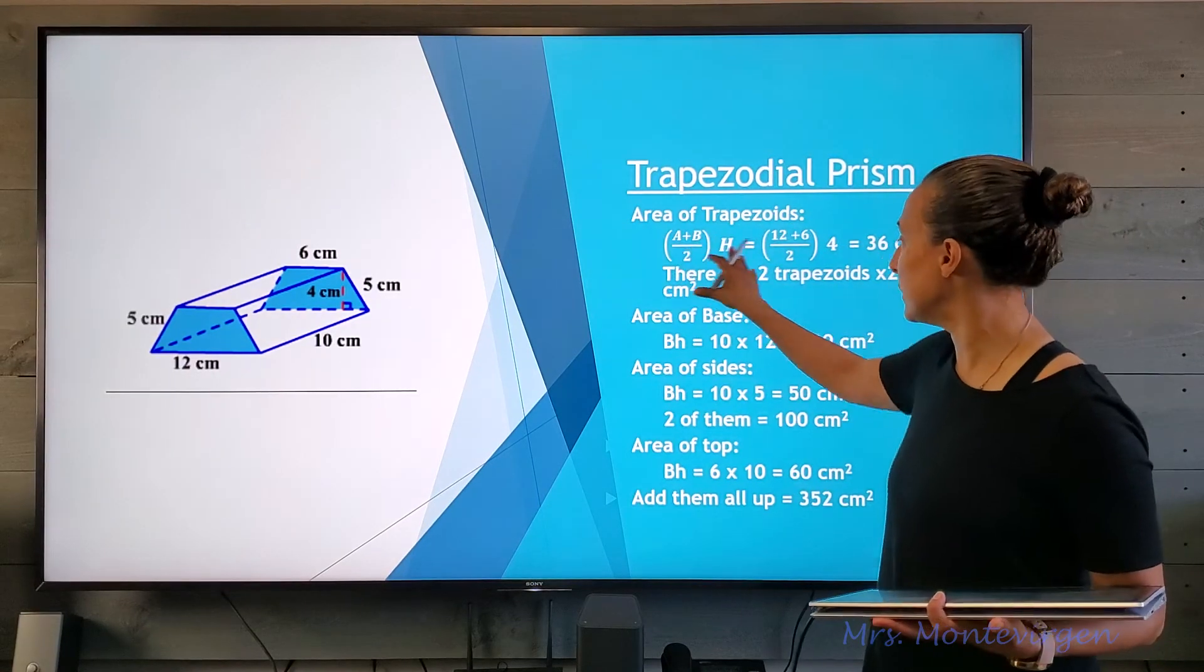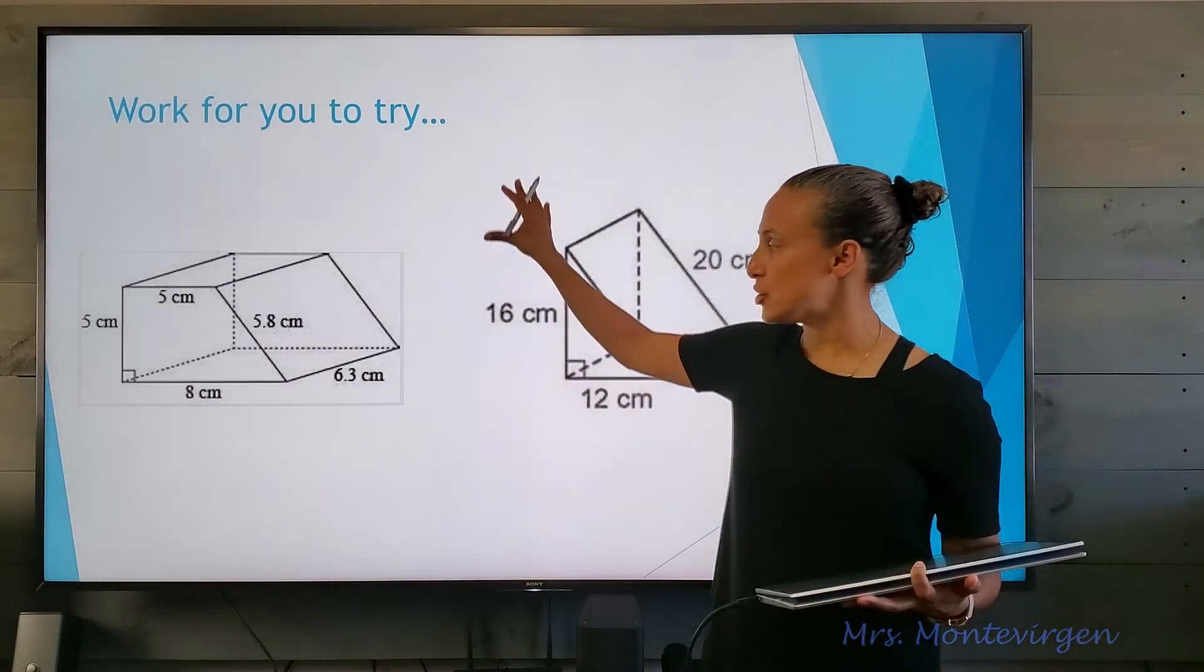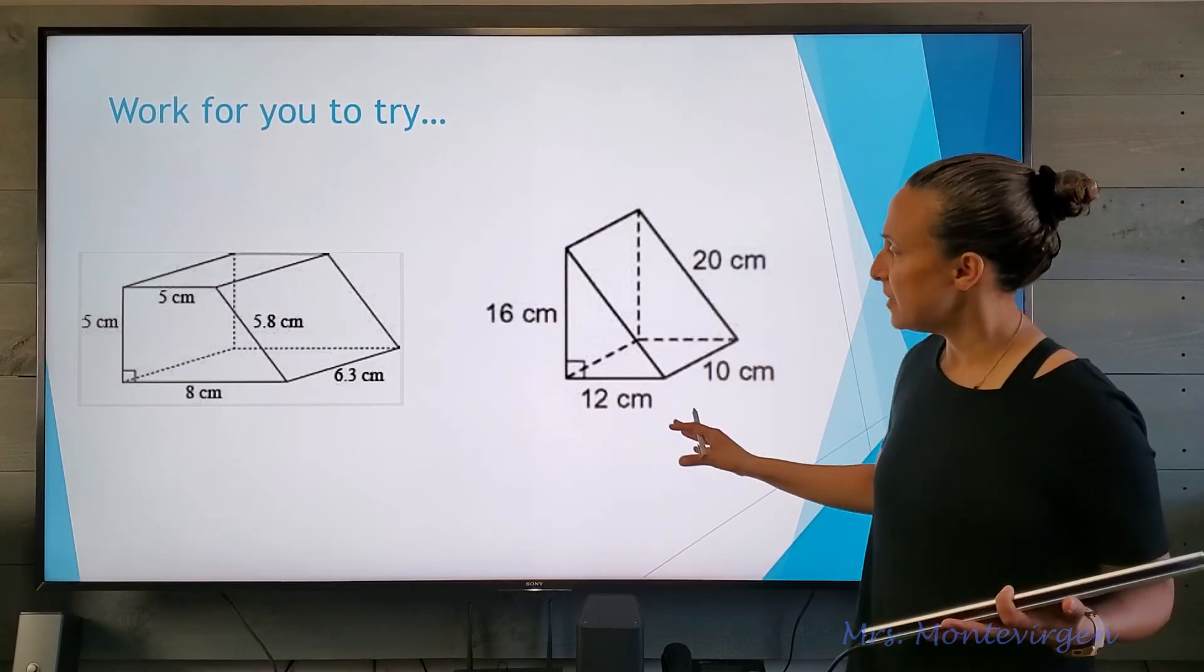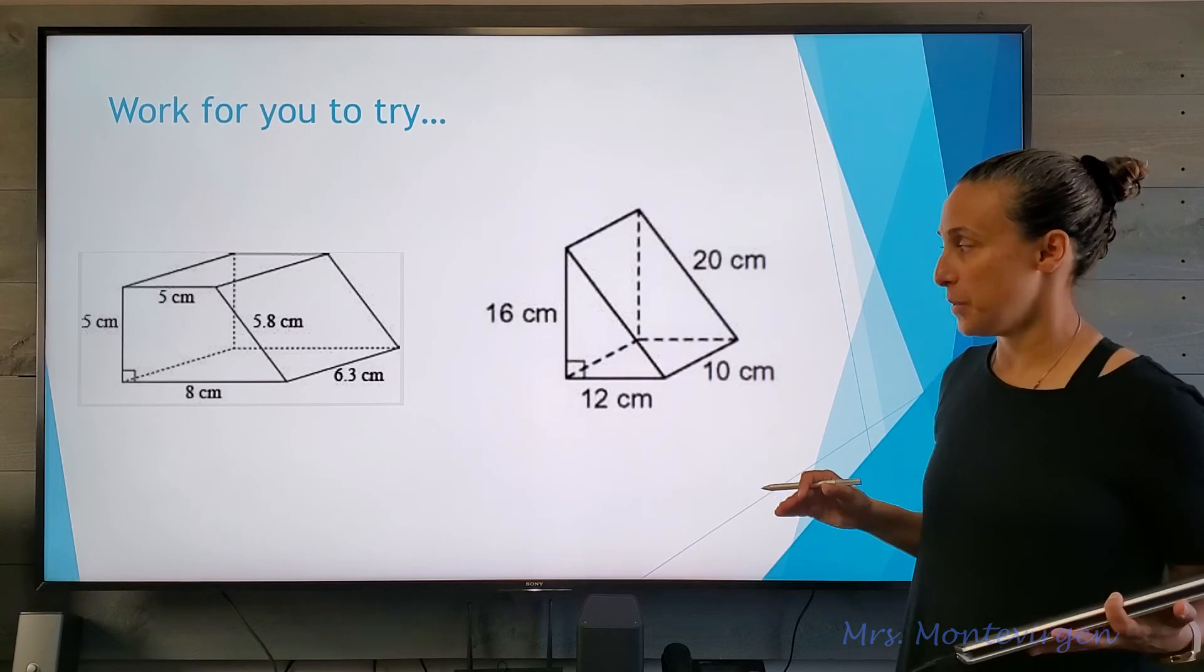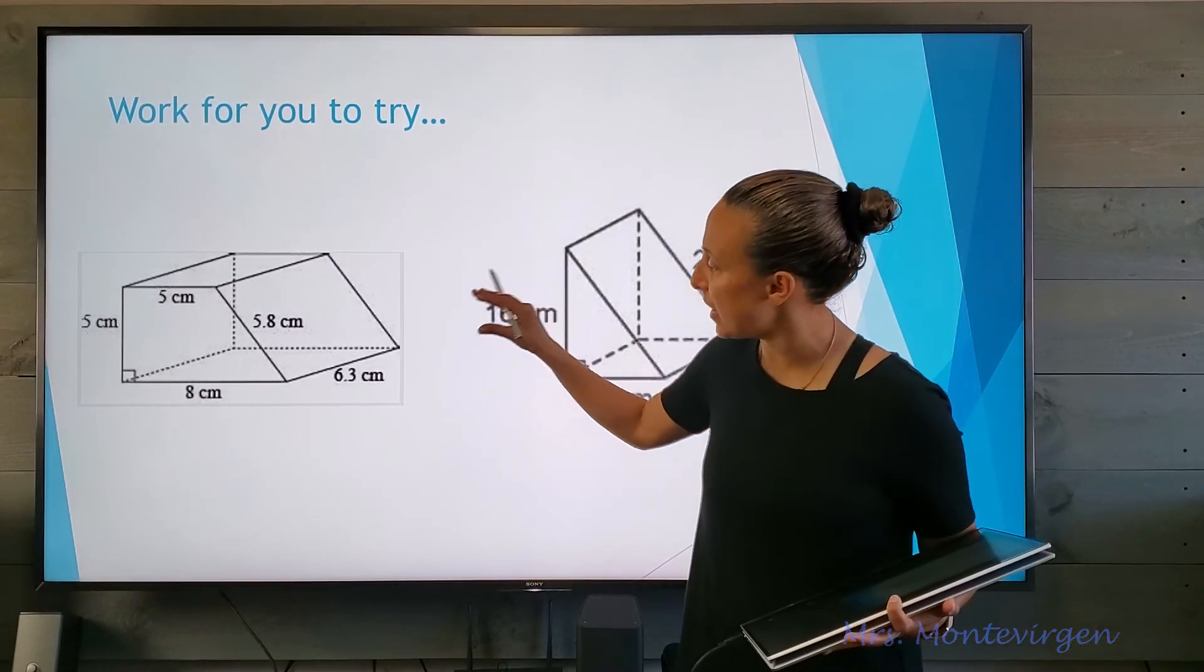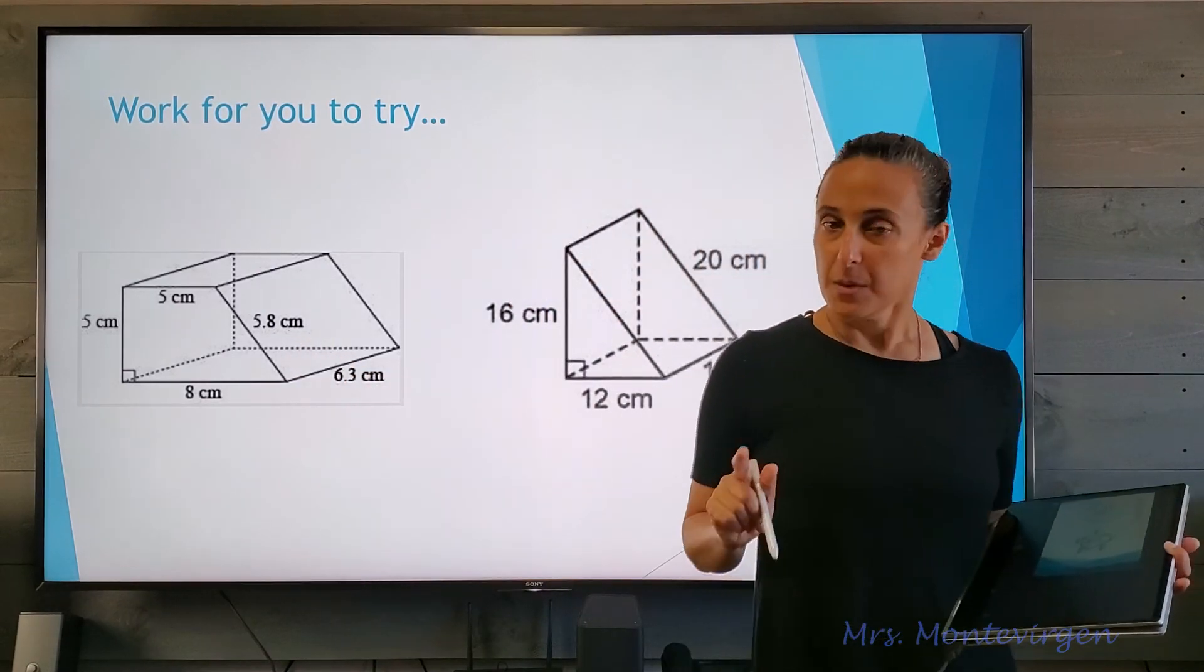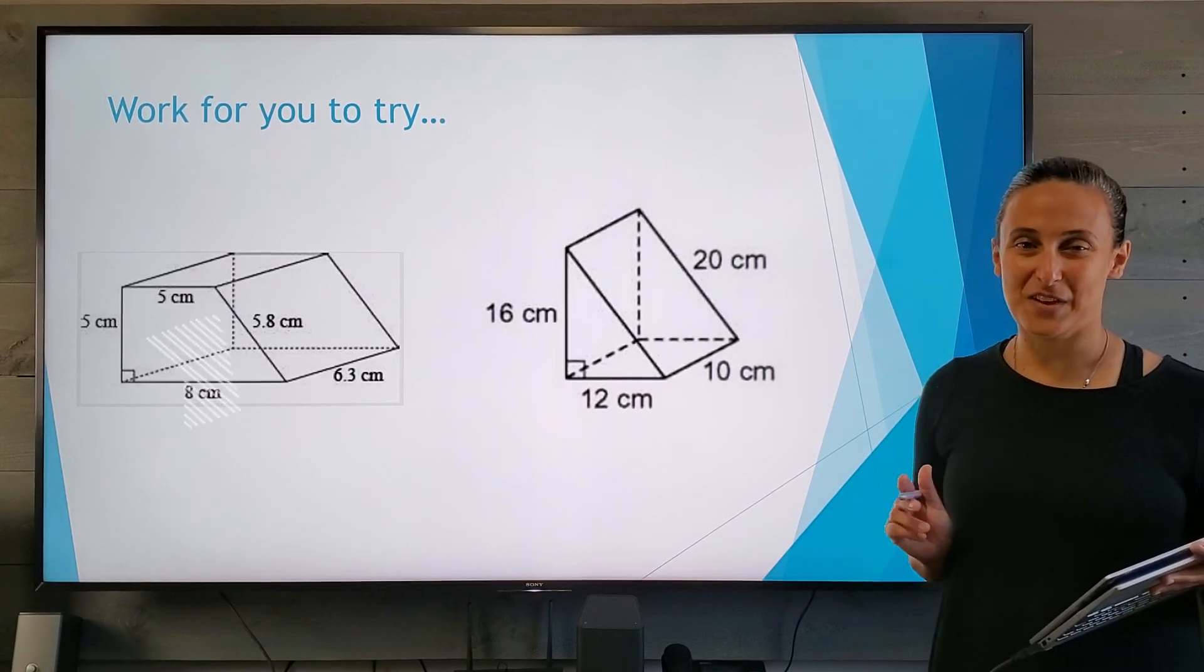Before you go ahead and try this work, if you need a rehash or need to take a look at the video again, please by all means do that. You can pause the video here. There are two prisms here for you to work with. Just remember line number one has to be the formula. Review your work and make sure you're getting each of the different faces. Both of these dimensions deal with decimals, so be careful. Good luck and we'll see you in the next video.